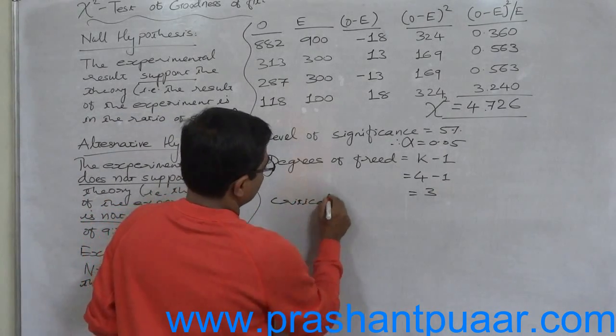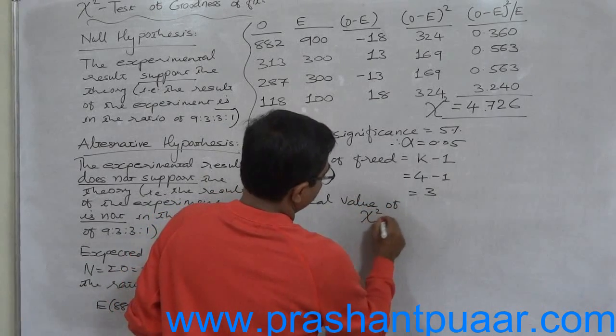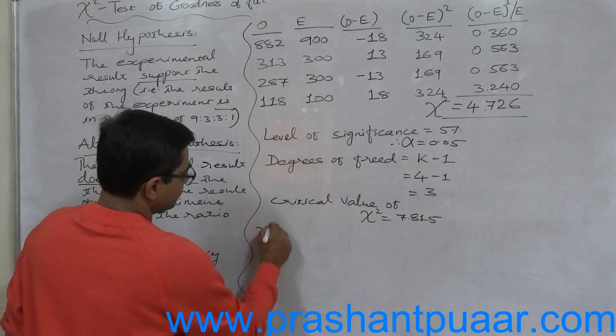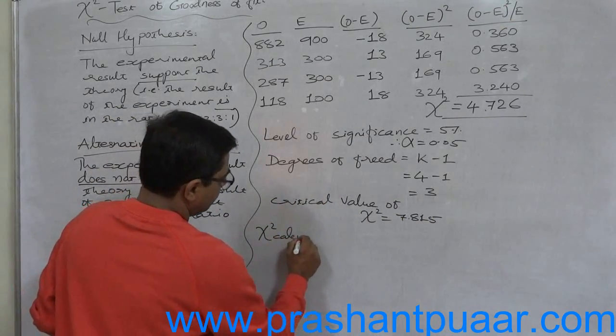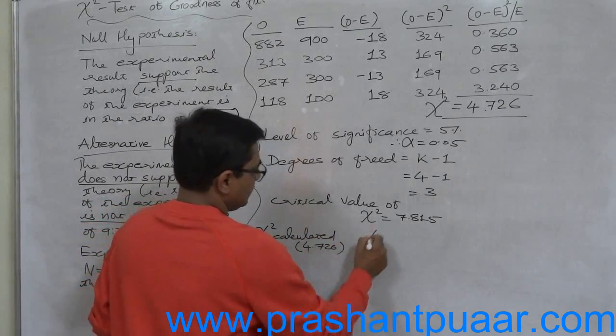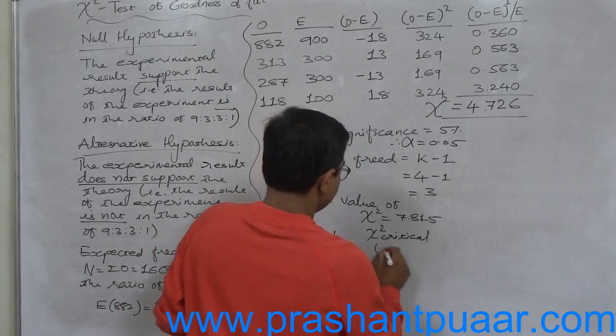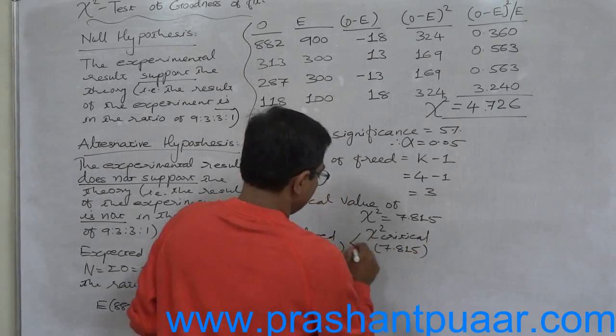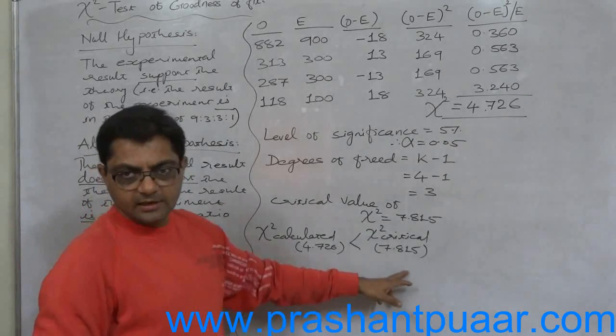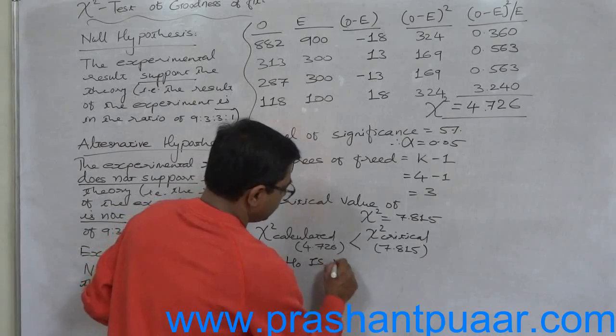Chi-square of 7.815. Now comparison: chi-square calculated is 4.762, chi-square critical is 7.815. The calculated value of chi-square is less than the critical value, so the null hypothesis is not rejected.